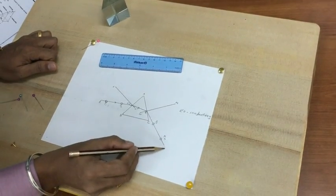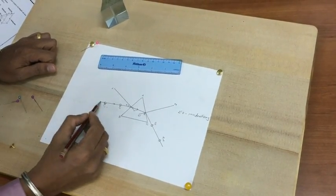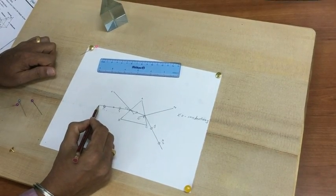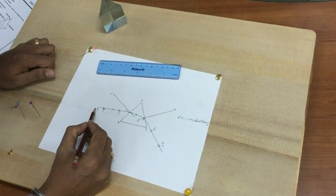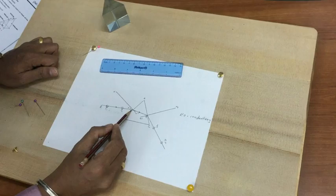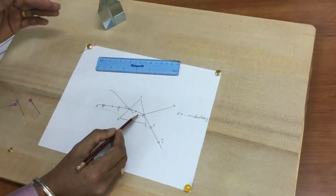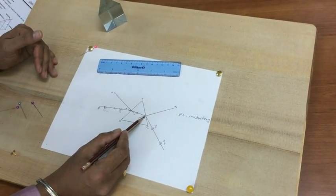Here you can see that the ray EO is the incident ray, and as it enters from a rarer medium into a denser medium, it bends towards the normal.